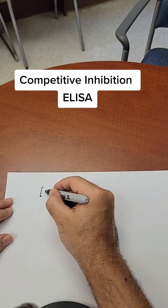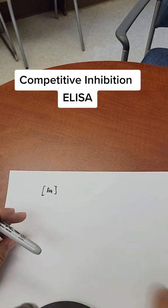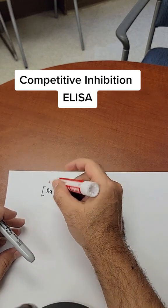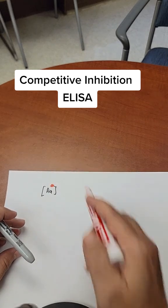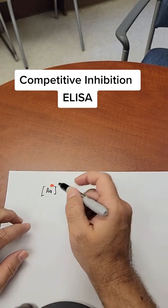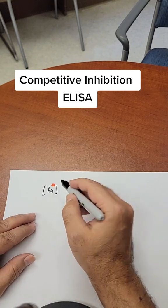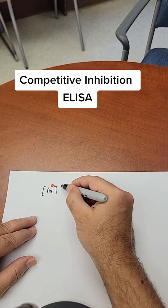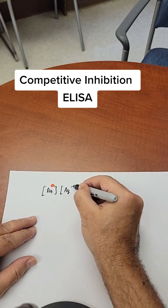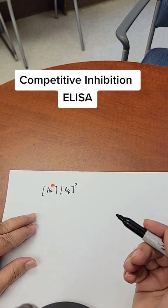We are going to have some antigen here, which we can buy commercially, which is going to be labeled with some enzyme — for example, horseradish peroxidase. We want to find what is the concentration of the same antigen in the patient's serum, for example.